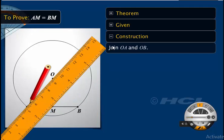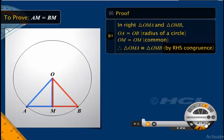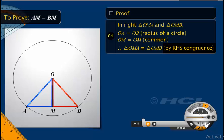Let's join OA and OB to make two triangles. Note that both triangles are right-angled triangles. The two arms of the triangles, that is OA and OB, are equal because both OA and OB are equal to the radius of the given circle. Also, side OM is common to both triangles. Therefore, by RHS congruence,